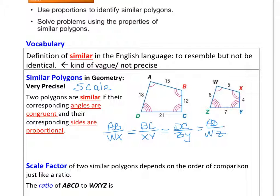Now we're trying to see if all the corresponding sides are proportional. So we've written a series of extended proportions here, extended ratios, and now we're going to substitute in some numbers. AB is 15 to 5, BC is 12, XY is 4, DC is 21, ZY is 7, AD is 18, and WZ is 6.